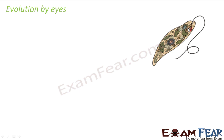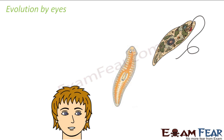This eye spot gave some survival advantage to these organisms, so they were benefited. Since they were benefited, natural selection came into play — anything that is good for an organism, nature also supports it. So this eye spot was something which gradually with time started developing. In euglena, this small eye spot was hidden and not very distinct, but gradually in flatworms like planaria, the eye spots became little more visible and could actually be located.